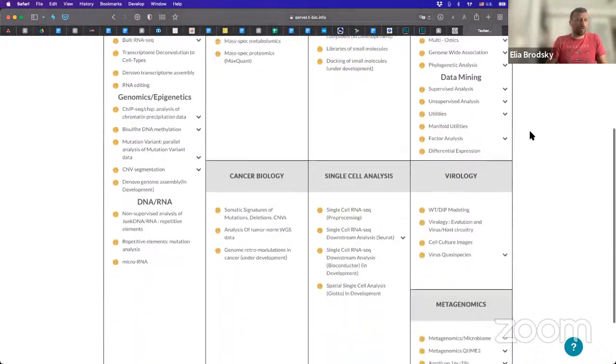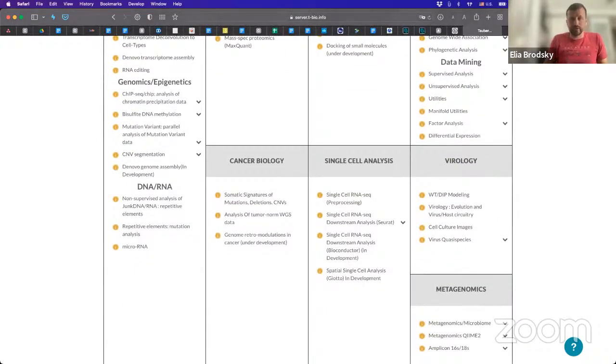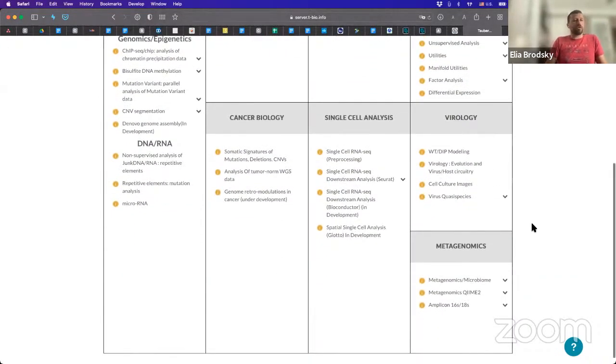If you follow my example—I pasted the link in the chat—you'll see there's a whole section here dedicated to metagenomics. That includes three different sections: metagenomics or microbiome, metagenomics using QIIME2, and amplicon 16S and 18S, which looks at Data2 and denoising the reads so we can assign taxonomy.